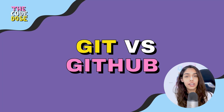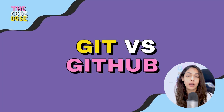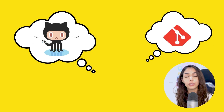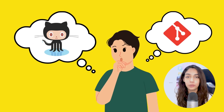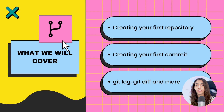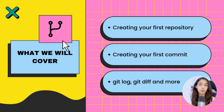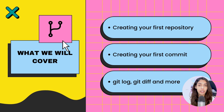In the previous video, I shared a high-level overview of what Git and GitHub are and how these two are different from each other. In today's video, I'm going to walk you through the process of creating your first repository, creating your first commit, and much more. Don't worry if you do not understand these terms like repositories or commits right now — I will cover everything in this video, so keep watching.